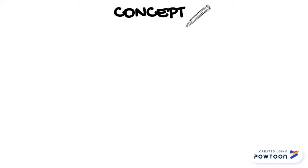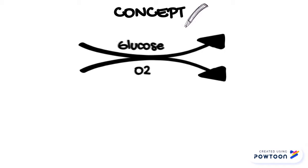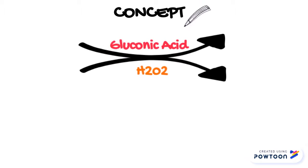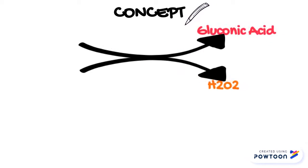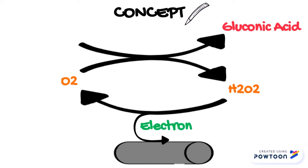The mechanism in first generation biosensor: glucose and oxygen react with the glucose oxidase enzyme simultaneously. Glucose is oxidized into gluconic acid. At the same time, hydrogen peroxide is produced in the presence of water. The hydrogen peroxide produced will then be measured by the electrode.